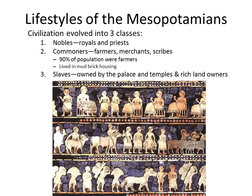Let's talk about the lifestyle of the Mesopotamians. Civilization evolved into three classes. First, the nobles: royals and priests. Then the commoners — almost 90% of the population: farmers, merchants, and scribes. Scribes were the people who wrote things down; they actually knew how to read and write. These were the second tier of society. Then the bottom tier: the slaves, who were owned by the palace, the temples, and rich landowners. And you'll notice that even in the artwork, there's not a lot of fine detail placed on them.